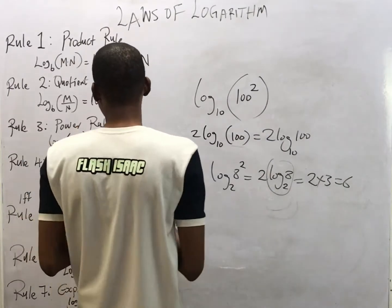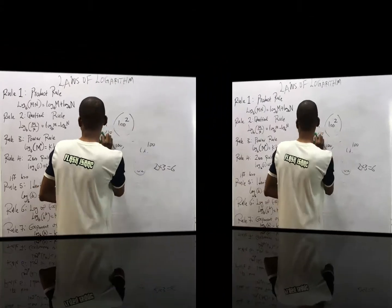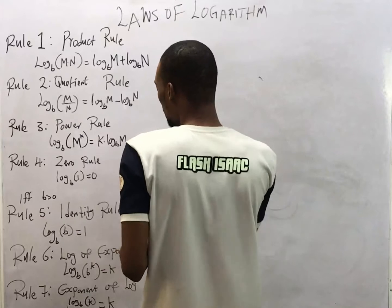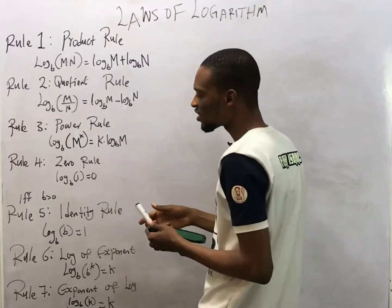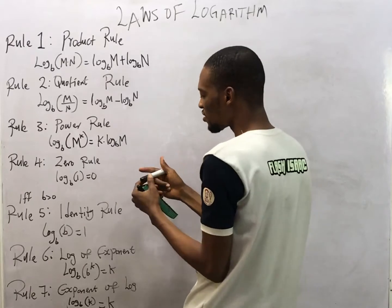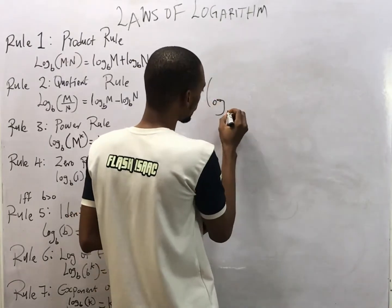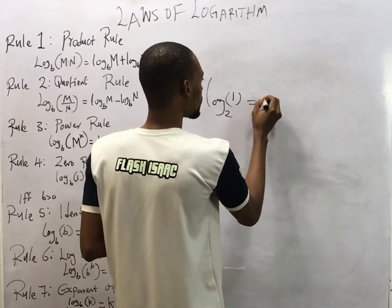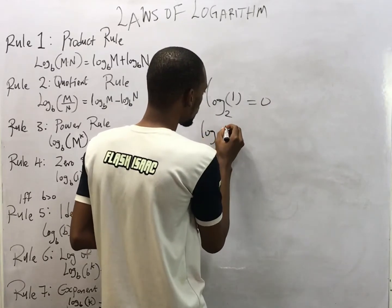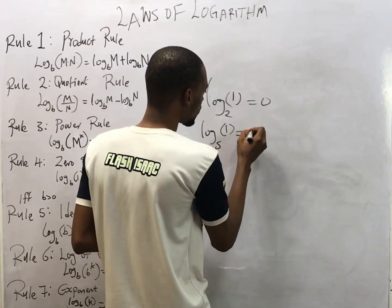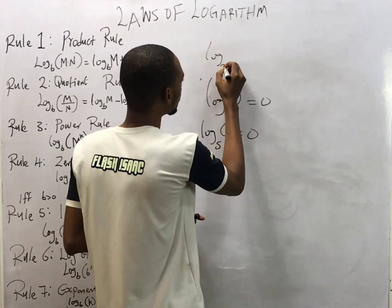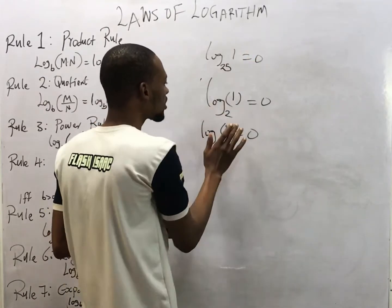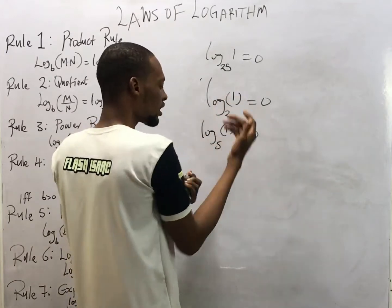The fourth law is the zero rule. It states that log base b of 1 equals zero for any base b greater than zero. So log base 2 of 1 equals zero, log base 5 of 1 equals zero — as long as the base is greater than one, the log of 1 to any such base gives you zero.